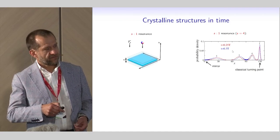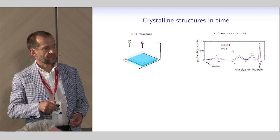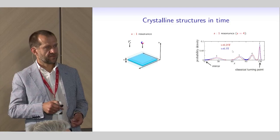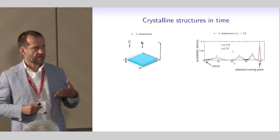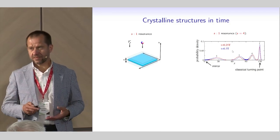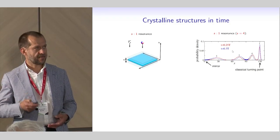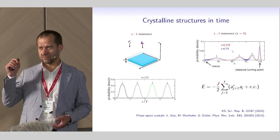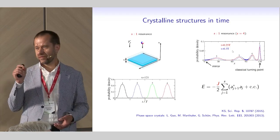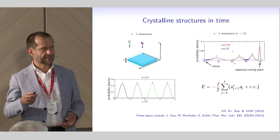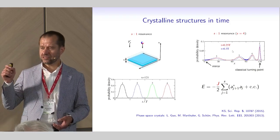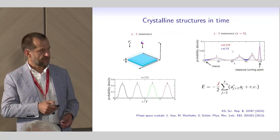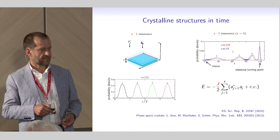The resonant Floquet states, plotted here in configuration space, are superpositions of four localized wave packets moving along the four-to-one resonant orbit and bouncing off the mirror. However, this configuration space is not the domain where we can observe crystalline structure. Crystalline structure can be observed in the time domain: when we fix a position in space close to the resonant orbit and ask how the detection probability changes in time, it reveals a periodic crystalline structure.